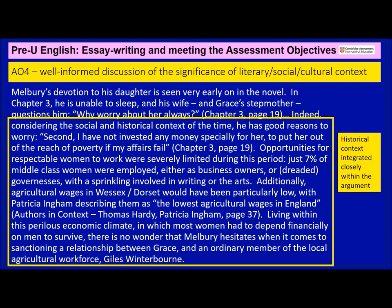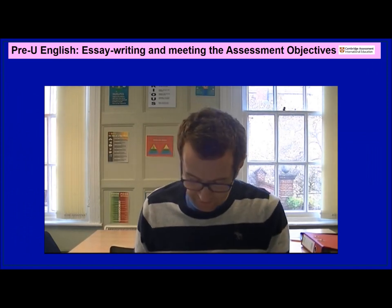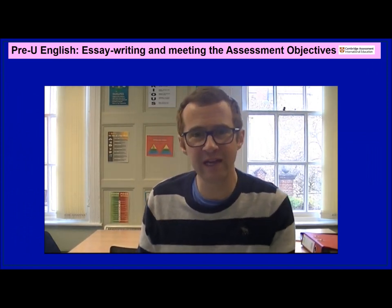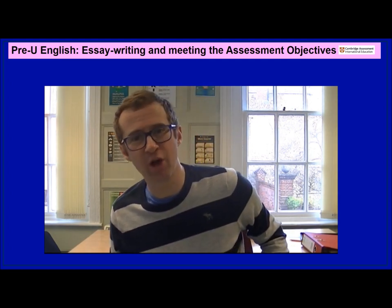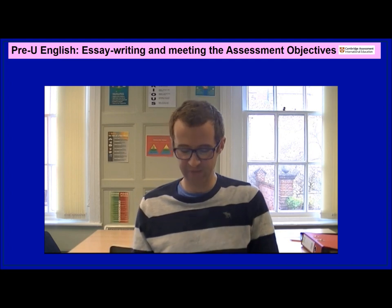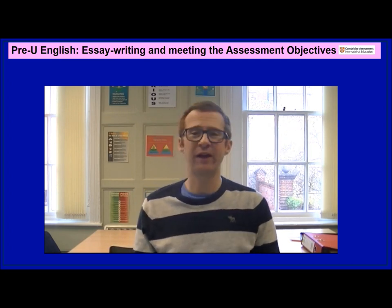AO4 asks for well-informed discussion of the significance of literary, social, and cultural context. The key principle is that I haven't just got a section talking generally about the social historical context — perhaps within the introduction. I've integrated it within my core argument. It is precisely because women had so few opportunities in the mid to late 19th century that Mr Melbury is right to worry about his daughter's future. It is understandable, because of this context, that he is so desperate to intervene. This video has given tips on the Pre-U A-level essay writing process and practical examples of how to meet the different assessment objectives. I hope it's been useful — many thanks for watching.